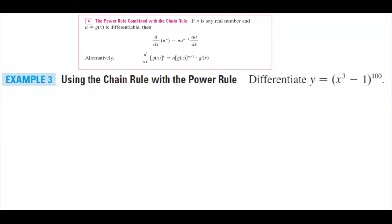So first we're going to let u equal g of x. So u is going to equal g of x, and what g of x equals in our problem is x cubed minus 1, which is the inside of that function. And we know that n is going to equal 100 since that is the exponent.